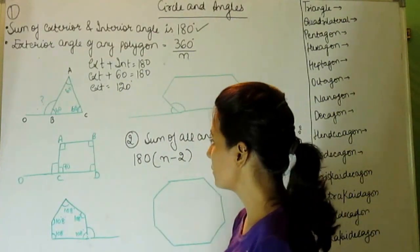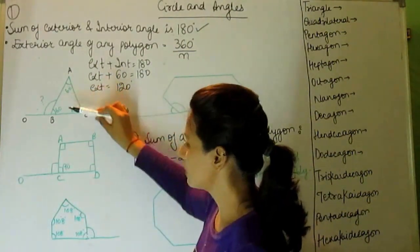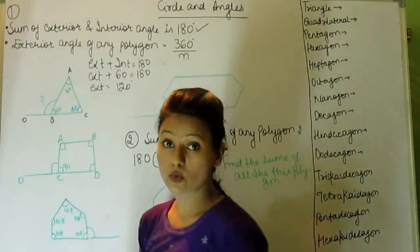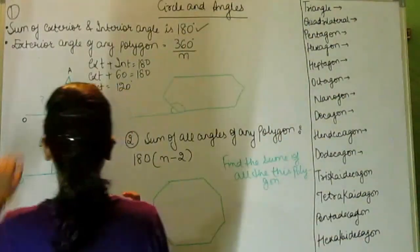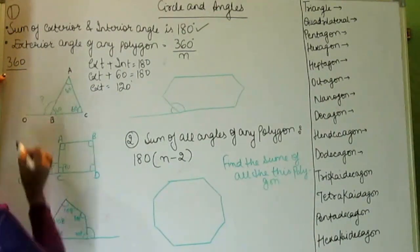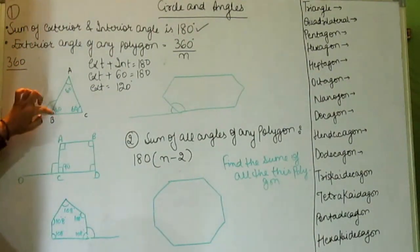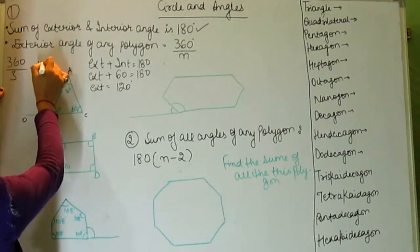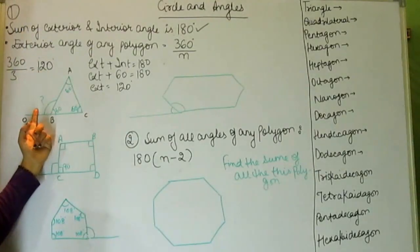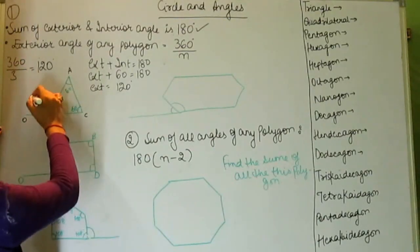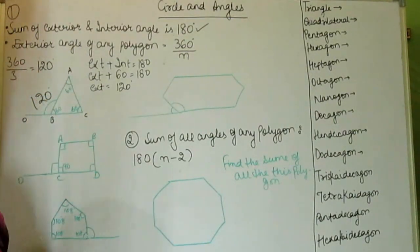Another option: suppose we are not given any angle and we don't know what type of triangle it is. We can use the formula 360 divided by N. N is the number of sides, and a triangle has 3 sides, so 360 divided by 3 equals 120. That is the exterior angle.